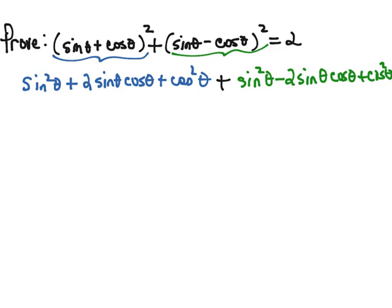That's all on our left side, and we're trying to prove that this equals 2. If we go through and combine like terms, we have a sine squared and a sine squared, so that's going to be 2 sine squared.